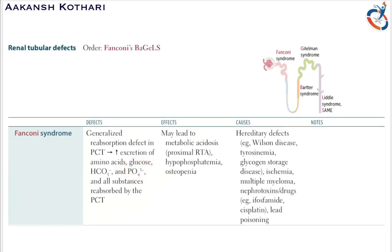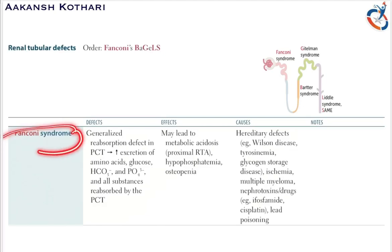Since a lot of phosphate is lost and not reabsorbed by the proximal convoluted tubule, there is hyperphosphaturia and osteopenia.